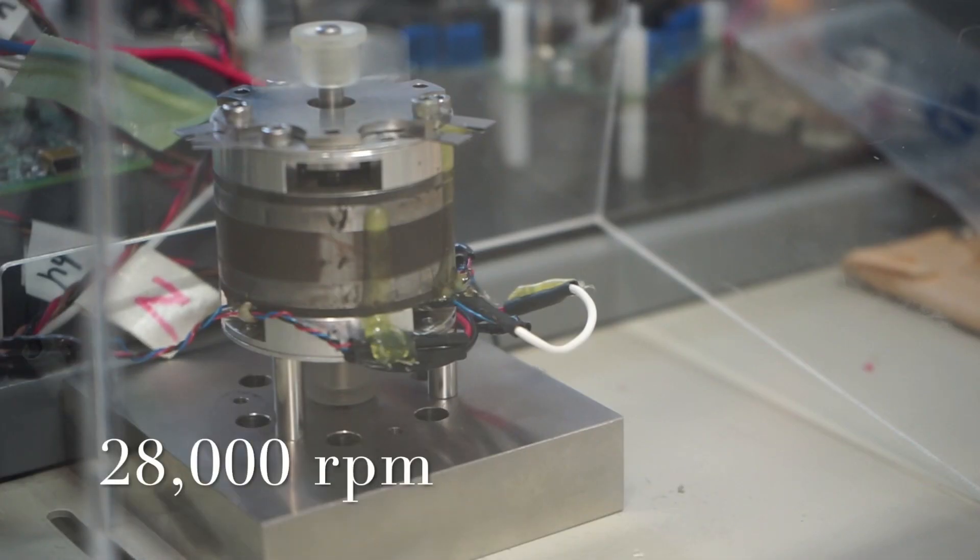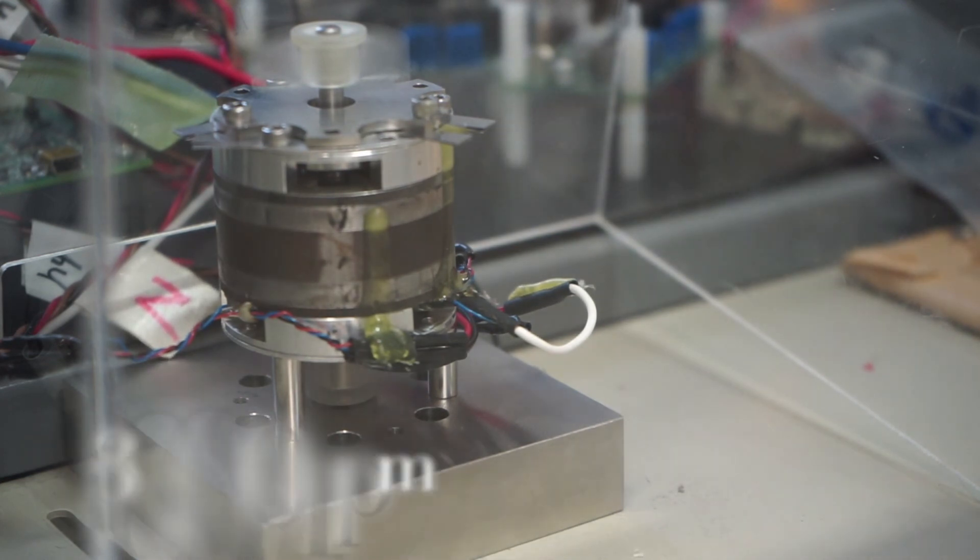Now, we attach a fan to the rotor tip. This will allow us to see the movement easier. This machine reaches high rotational speeds up to 30,000 rpm.